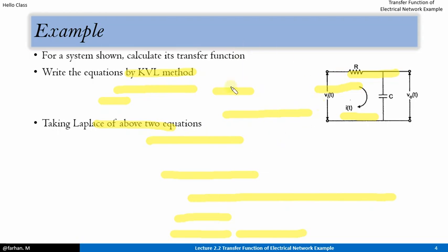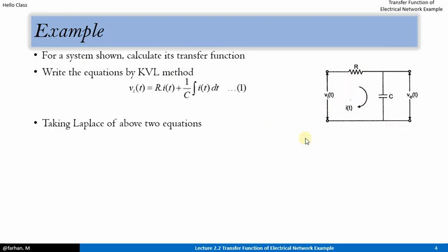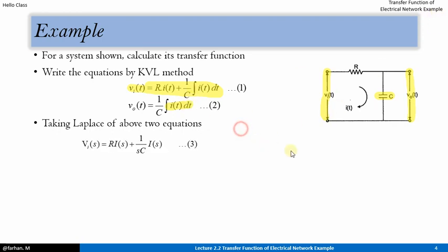Let's see an example of how to calculate the transfer function of a basic electrical network. This is an RC network. First, we write the equations by the KVL method. So Vi(t) = R·i(t) + (1/C)∫i(t)dt. This is the basic equation. The second equation is Vout(t) = (1/C)∫i(t)dt, which corresponds only to the capacitor. Now we take the Laplace transform of these two equations. Vi(s) = R·I(s) + (1/sC)·I(s), and Vout(s) = (1/sC)·I(s).